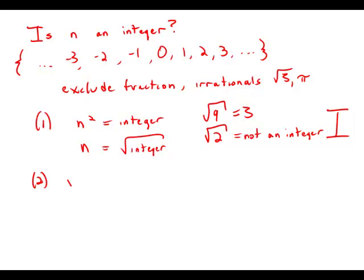Statement number two tells us that the square root of n is an integer. So, again, to solve for n, we just square both sides. n equals an integer squared. Well, when you square an integer, you always get another integer. So this is an absolute guarantee that n is an integer. So this statement is perfectly sufficient.